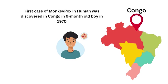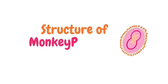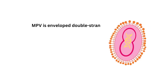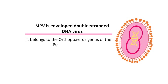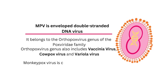The first reported case of monkeypox in humans was discovered in Congo in a nine-month-old boy in 1970, and from then it started to spread in humans worldwide. Monkeypox virus is an enveloped double-stranded DNA virus. It belongs to the Orthopoxvirus genus of the Poxviridae family, which also includes vaccinia virus, cowpox virus, and variola virus — meaning monkeypox is a close relative of smallpox and chickenpox.